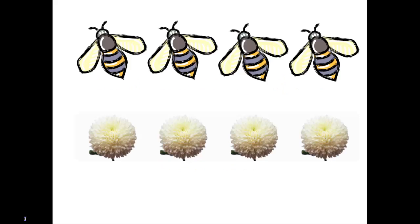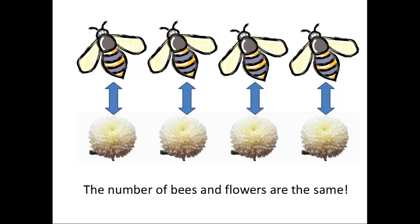Let's say, for example, we have several flowers and several bees. If each bee is paired to a different flower, and all bees and flowers are paired, then we actually know that the number of bees and flowers are the same.